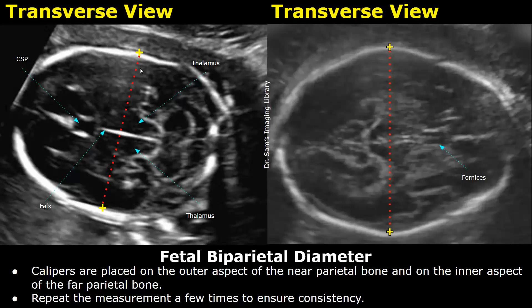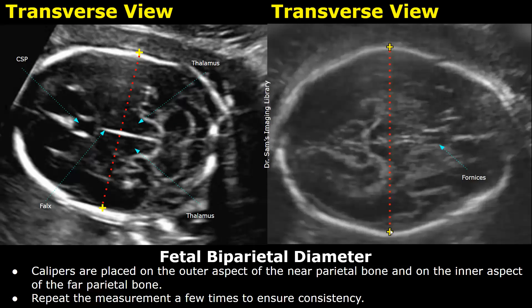Place one caliper at the outer aspect of the near parietal bone — place it right outside the hyperechoic parietal bone — and place the second caliper at the inner aspect of the far parietal bone, right at this point, and you will get the value of BPD. So one caliper on the outer aspect and the other at the inner aspect.